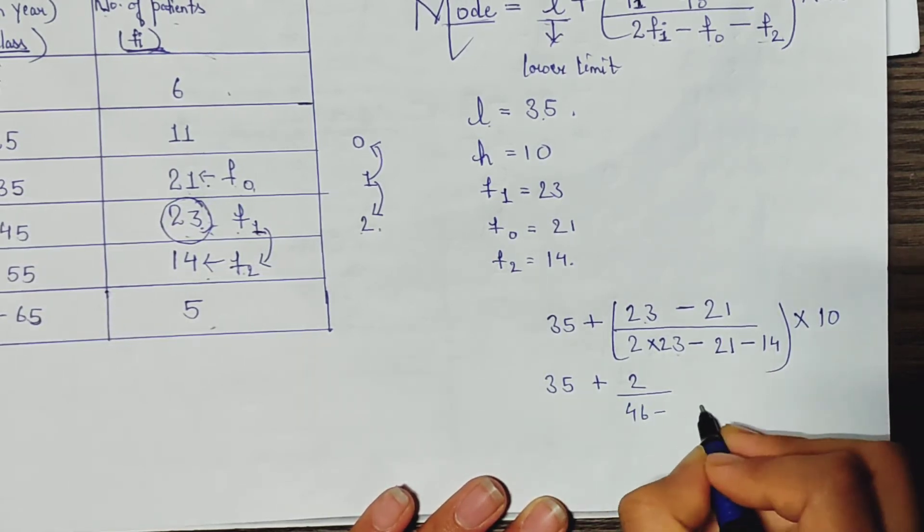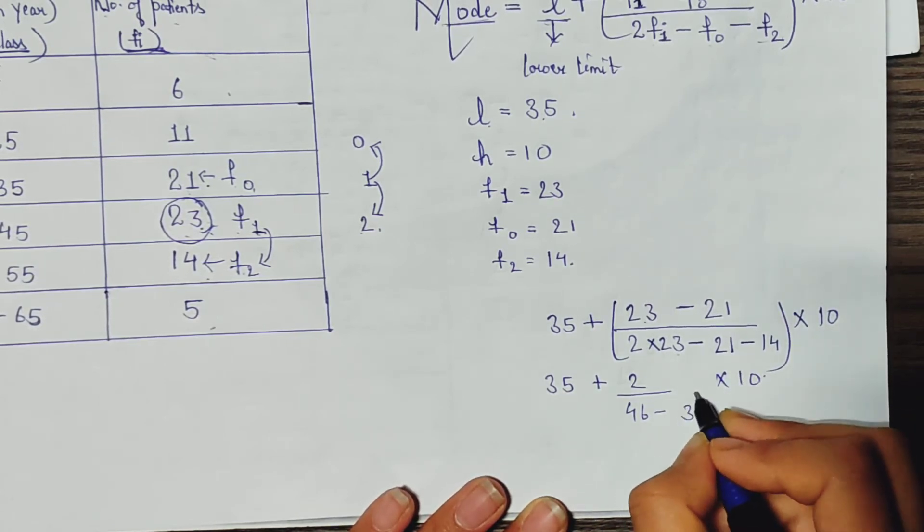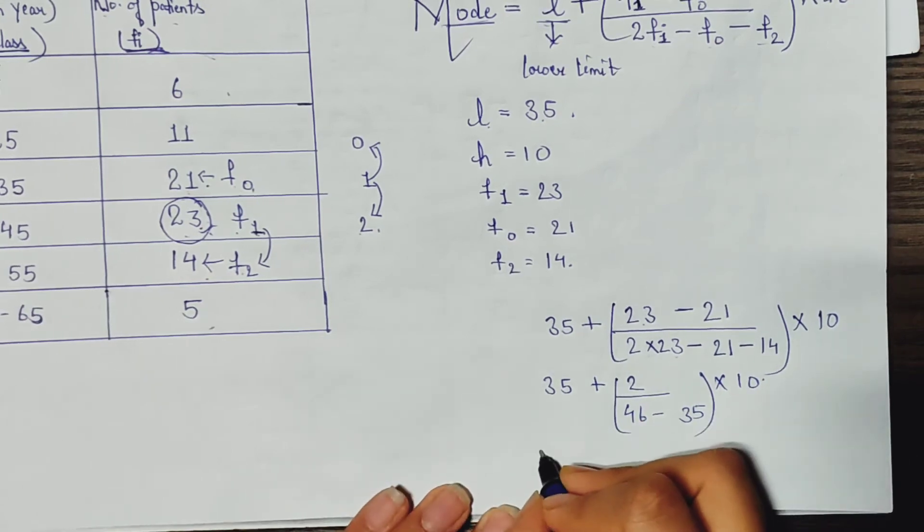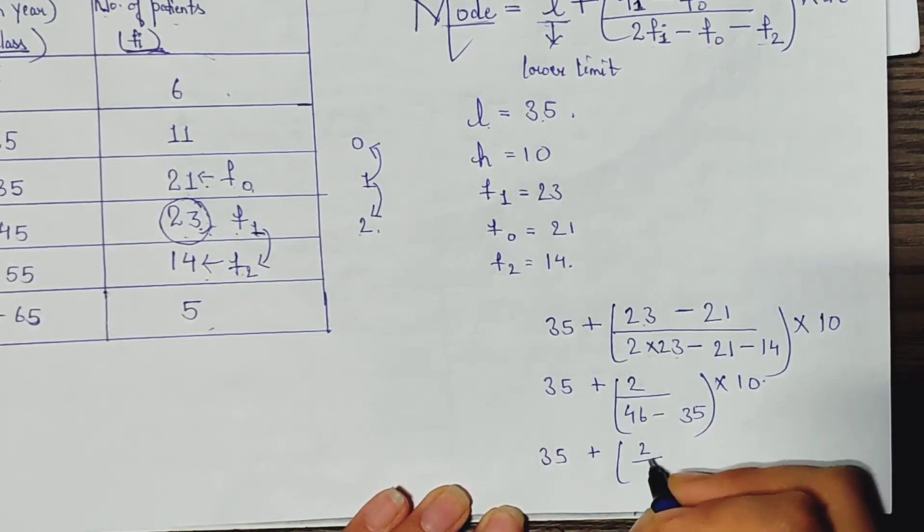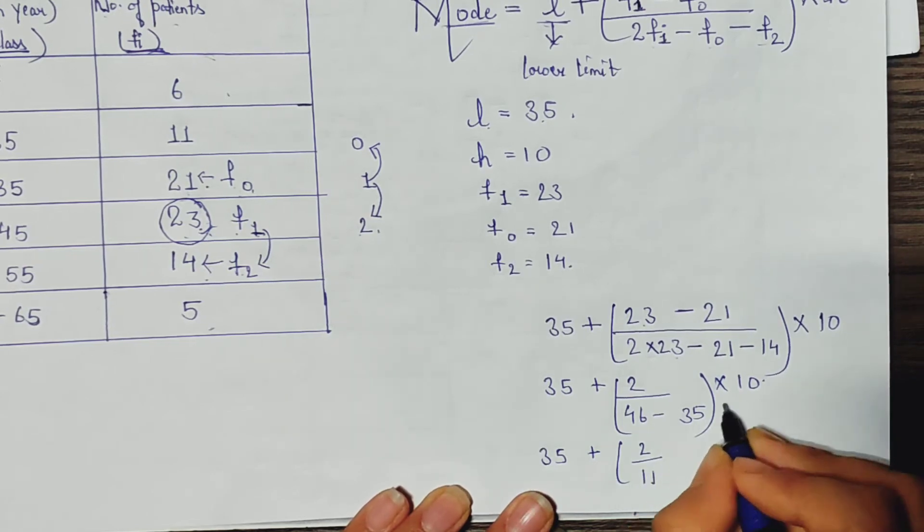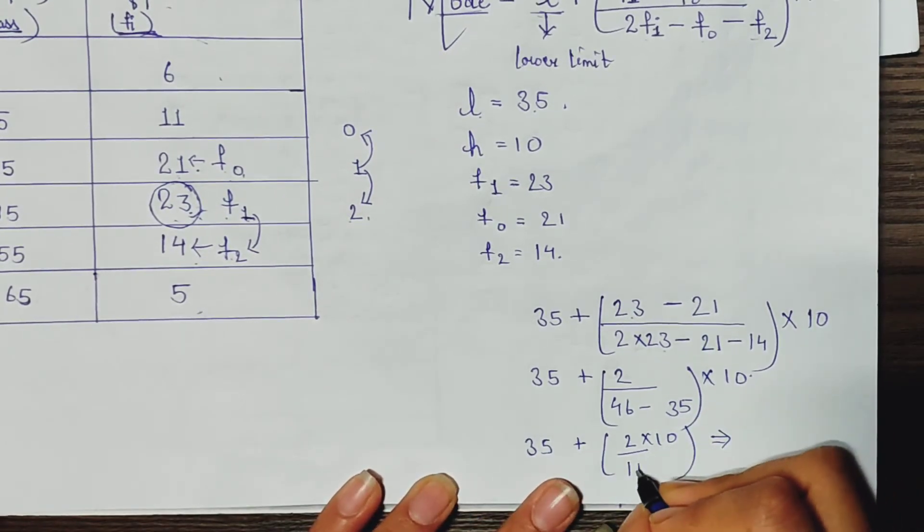35 plus 2 divided by 46 minus 35 into 10. 35 plus 2 divided by 11 into 10.